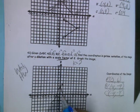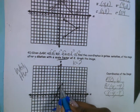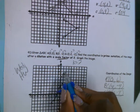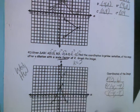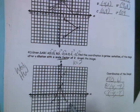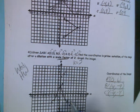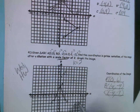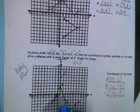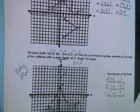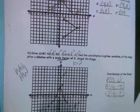So we got 0 and 6 — this is A prime. Then we have positive 4 and negative 4 — this is B prime. And we got negative 4 here and down 4 here — this is C prime.